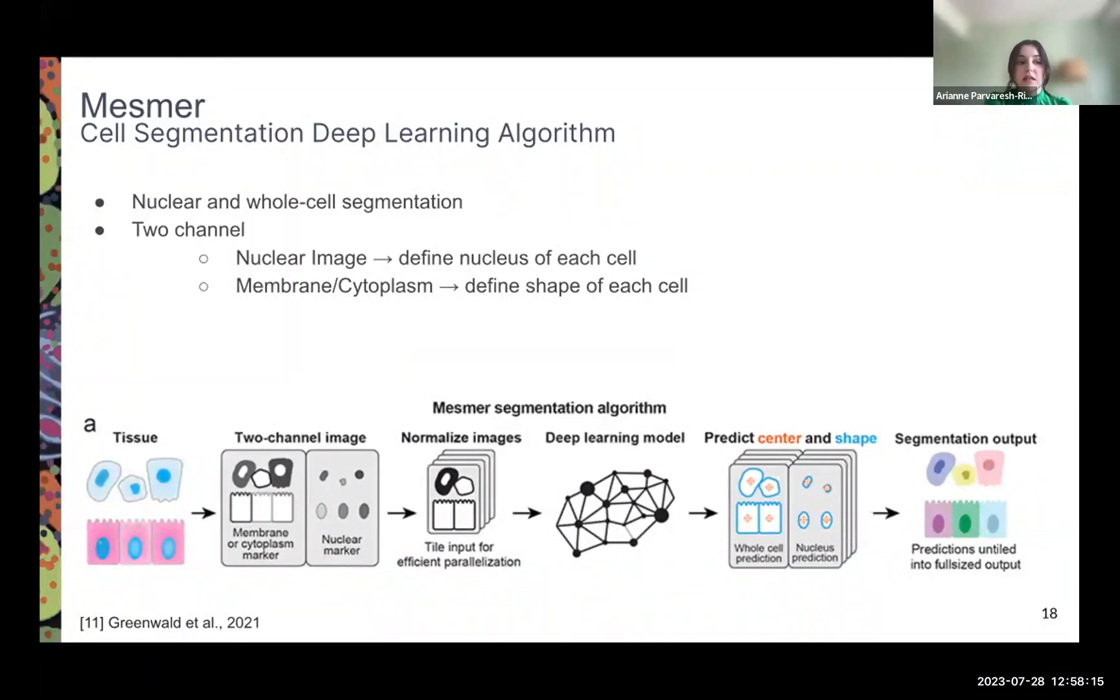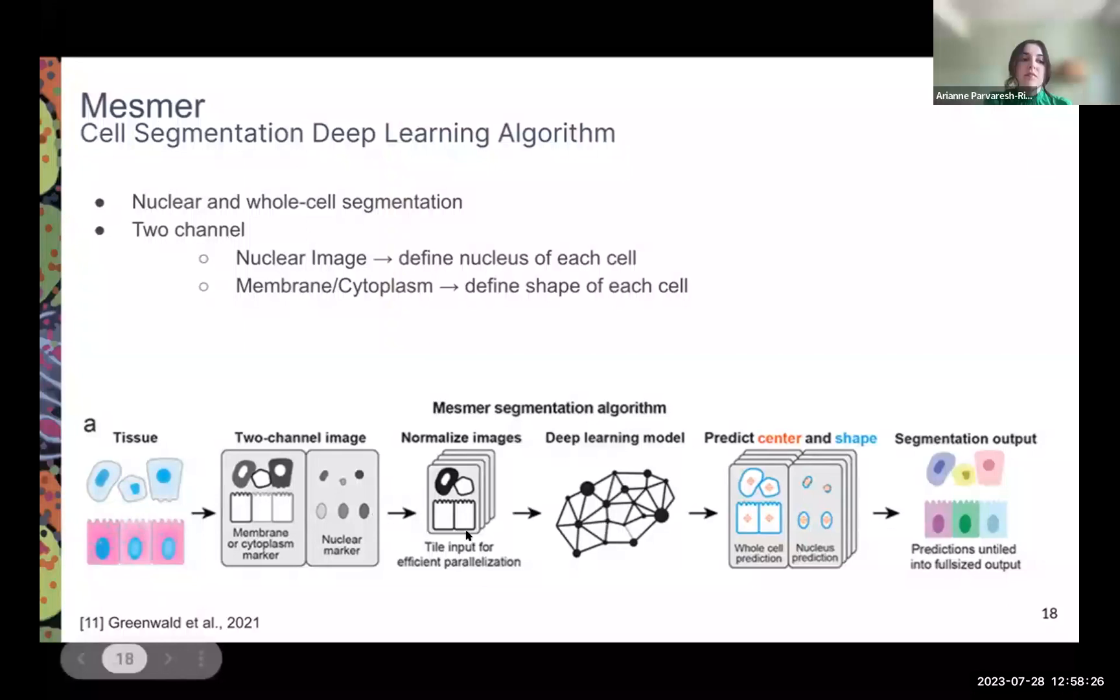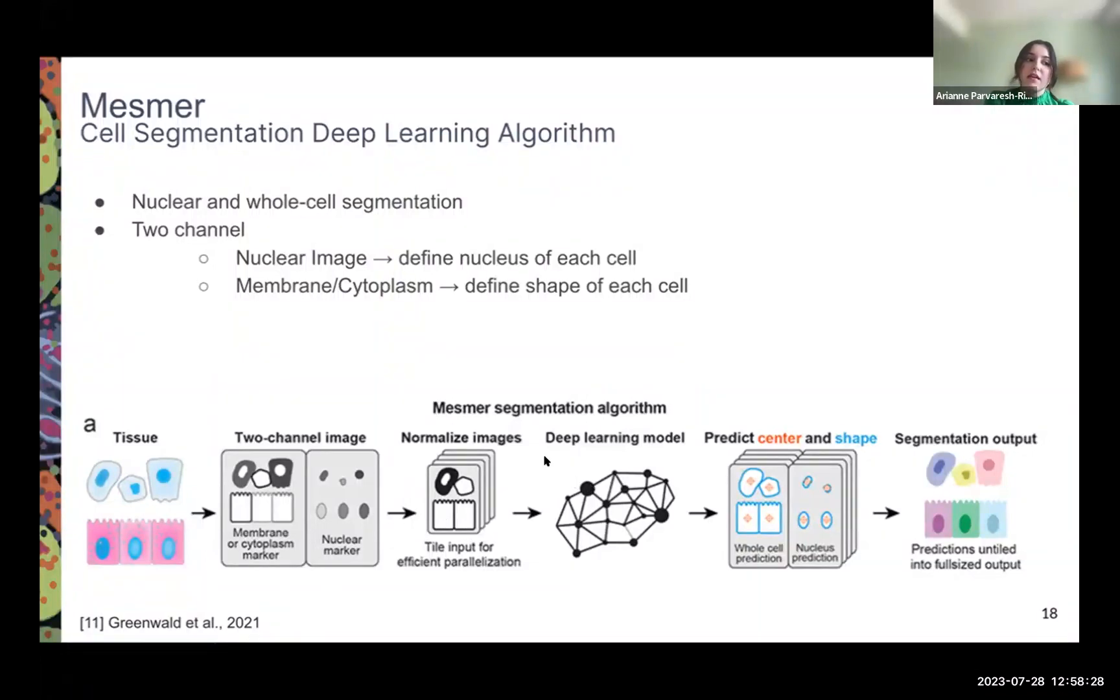The nuclear image defines the nucleus of each cell, and the membrane and cytoplasm channel defines the shape of each cell. Once a tissue sample is gathered, the two channels are identified, being the nuclear channel and the membrane channel. The images are then normalized, they run through a pre-trained deep learning model. The model predicts the center and shape of each cell, and then performs segmentation.